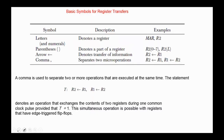The basic symbols for register transfers: letters and numerals denote a register — for example, memory address register or register R2. Parentheses denote a part of a register — for example, the low-order part of register R2 is written as R2(0:7). An arrow denotes transfer of information, and a comma is used to separate two or more operations executed at the same time. The statement denotes an operation that exchanges the contents of two registers during one common clock pulse, provided the control function or condition is true.